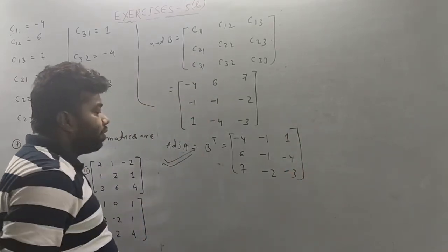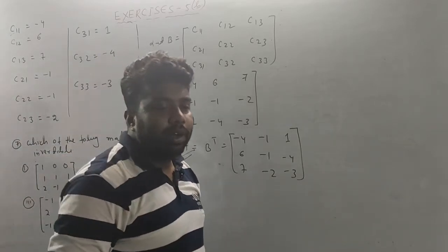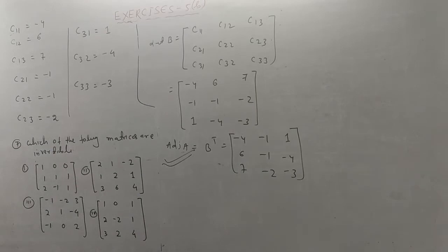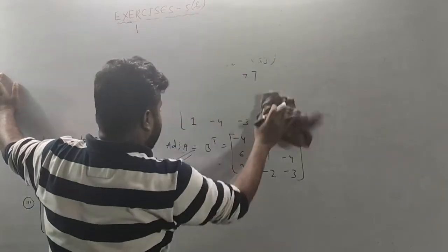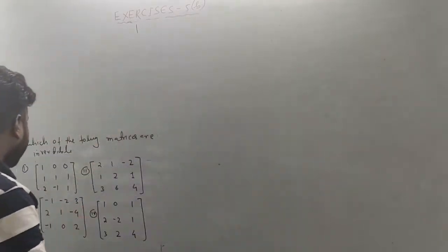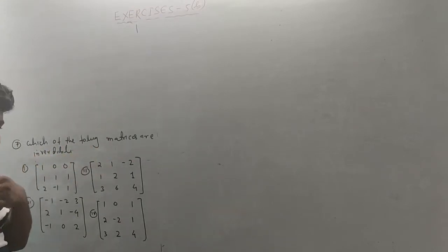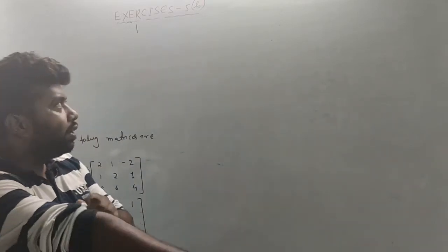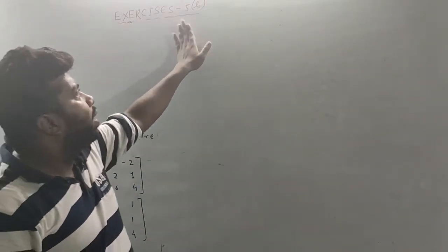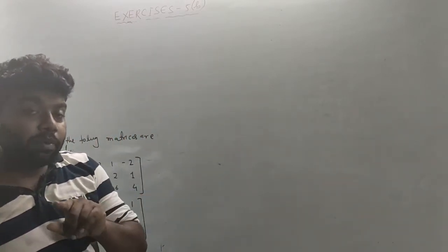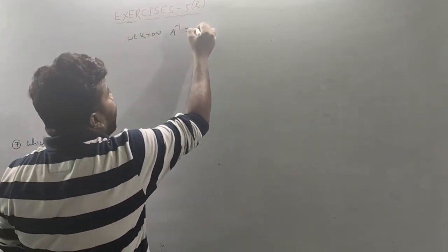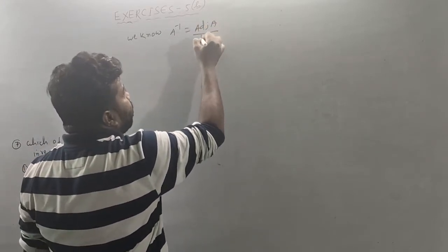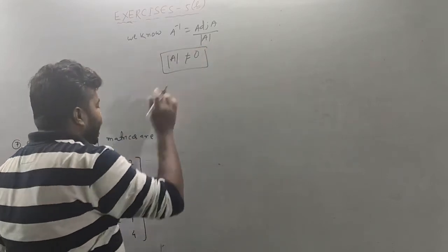This is the process after all the questions are done. So the video is possibly no time produced. So the student moves to question number 7: which of the following matrices is invertible? The reason it is invertible — we know the formula: A inverse equals adjoint A divided by mod A, where mod A is not equal to zero.